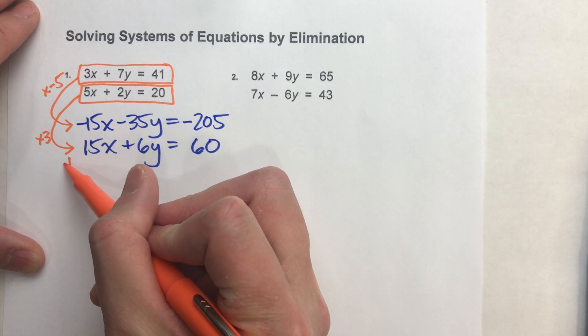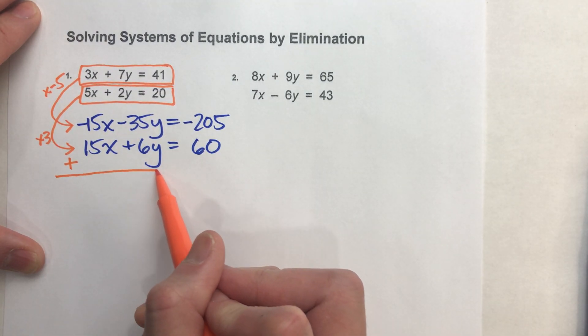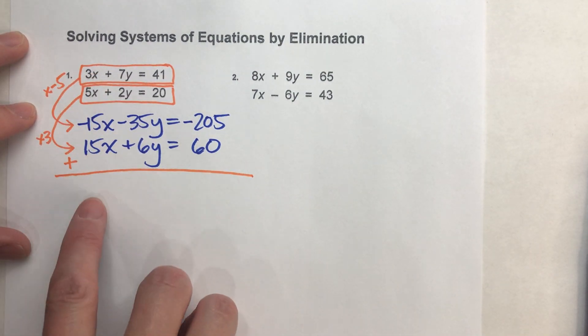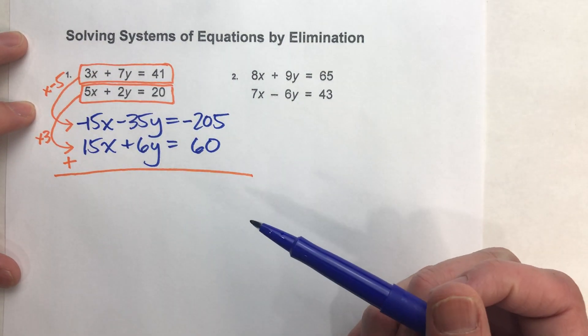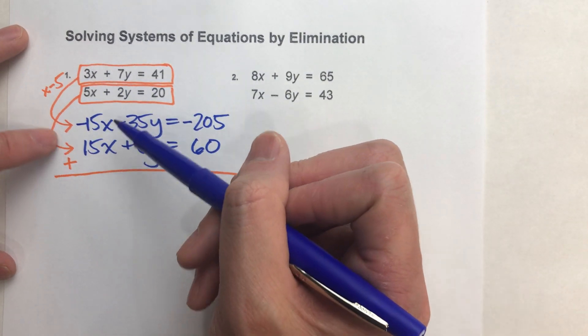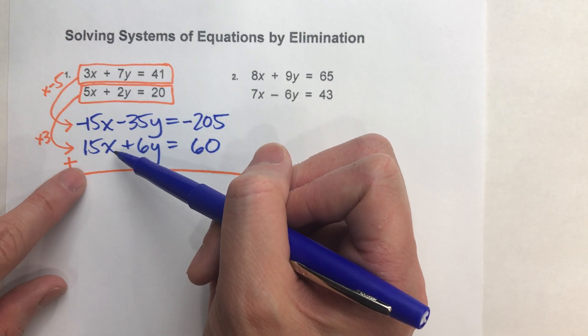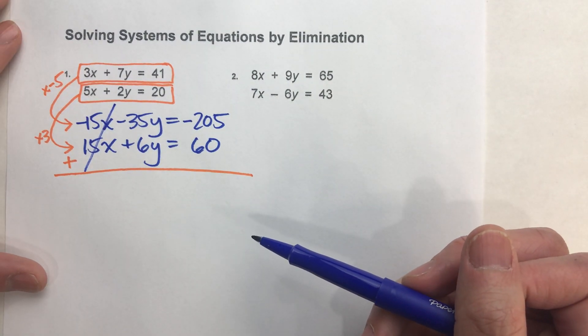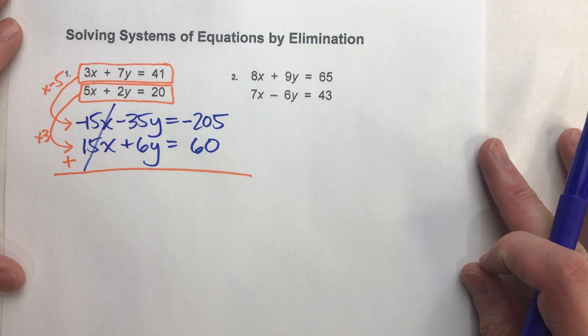Either way will work, and they'll both get you the same answers. So do whichever one is easiest for you. But in this example, I decided to try the x's. So let's do the x's here. So I matched them up. I've got negative 15x on top, positive 15x on the bottom. When I add them together, guess what? I've eliminated all my x's. You get zero x's.